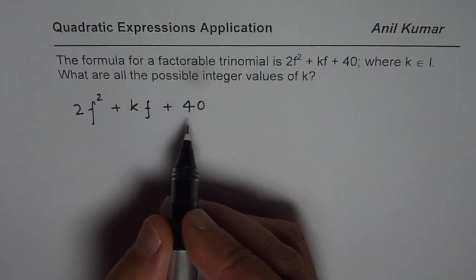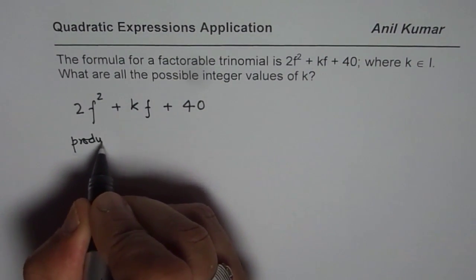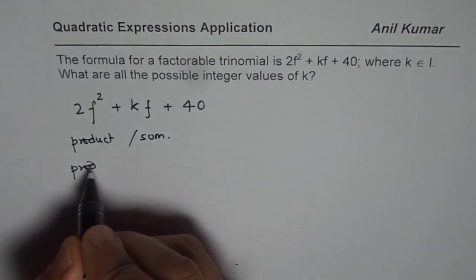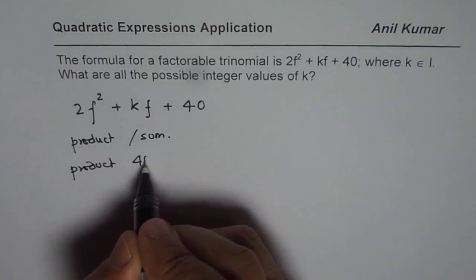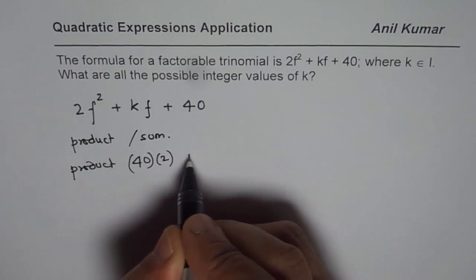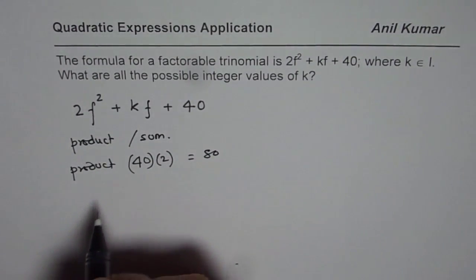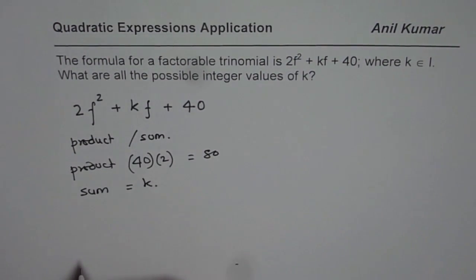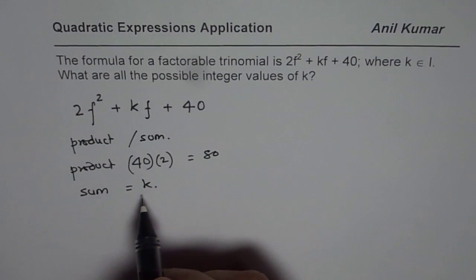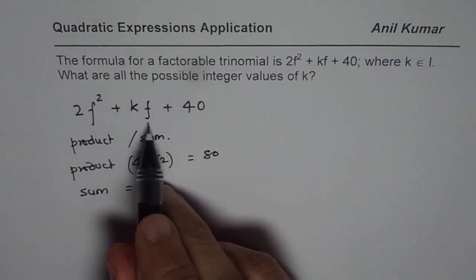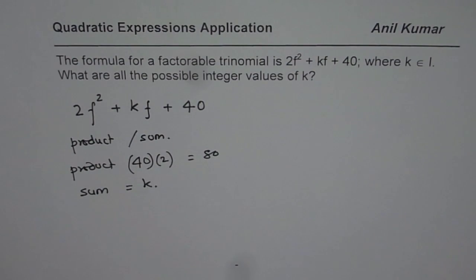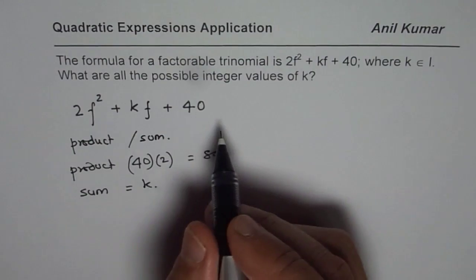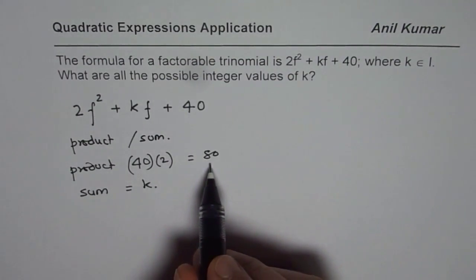Now as you can see, we are looking for a product and a sum. If the product is 40 times 2, which equals 80, then the sum should be equal to k. So all the combinations which can satisfy this condition will help us to factor the given equation. We will try to write all the combinations which give us a product of 80.